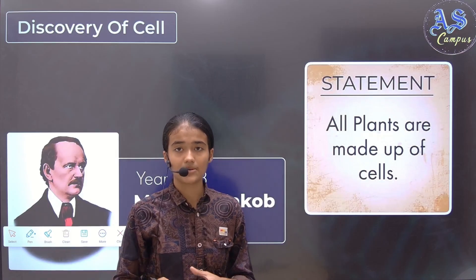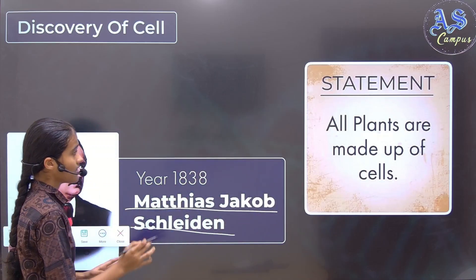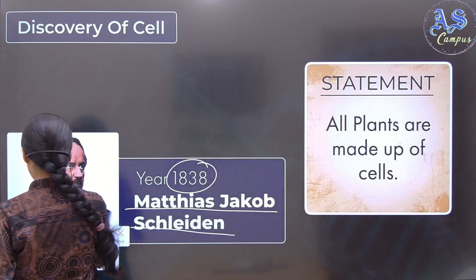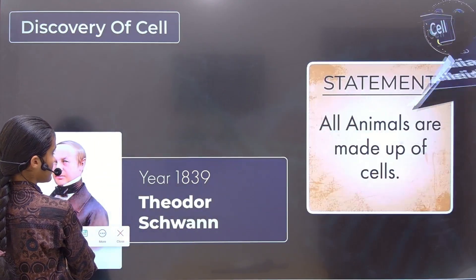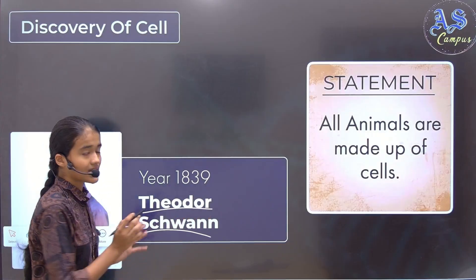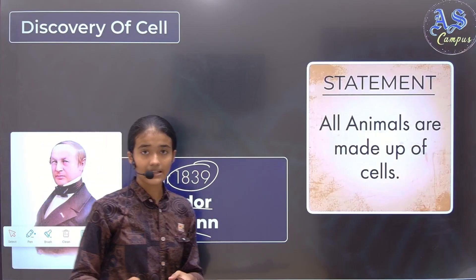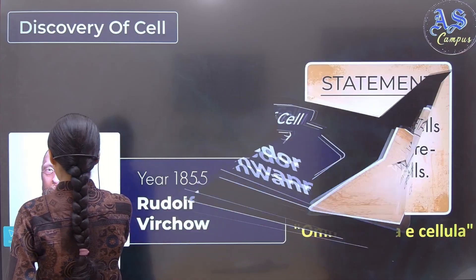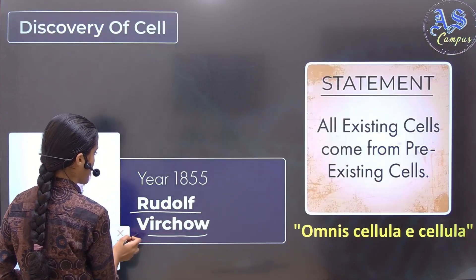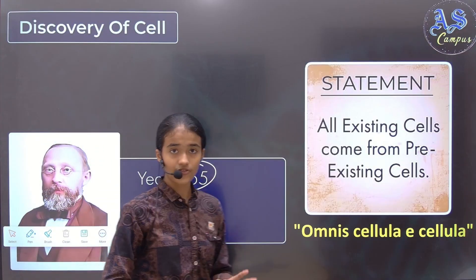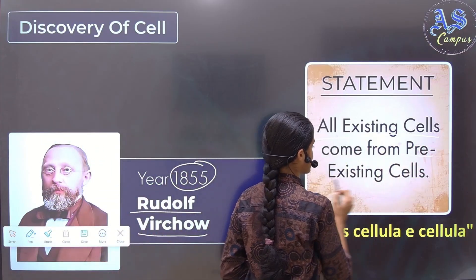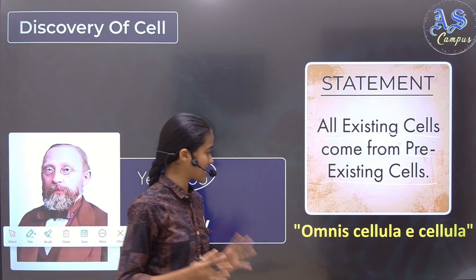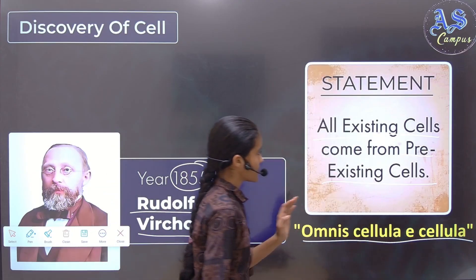Some other scientists also gave their statements. Matthias Jacob Schleiden gave his statement in the year 1838 that all plants are made up of cells. Then Theodor Schwann gave his statement in 1839 that all animals are made up of cells. Then Rudolf Virchow gave his statement in 1855 that all existing cells come from pre-existing cells, which means that old cells make new cells for the formation of organisms. He gave the statement: omnis cellula e cellula, which means this.